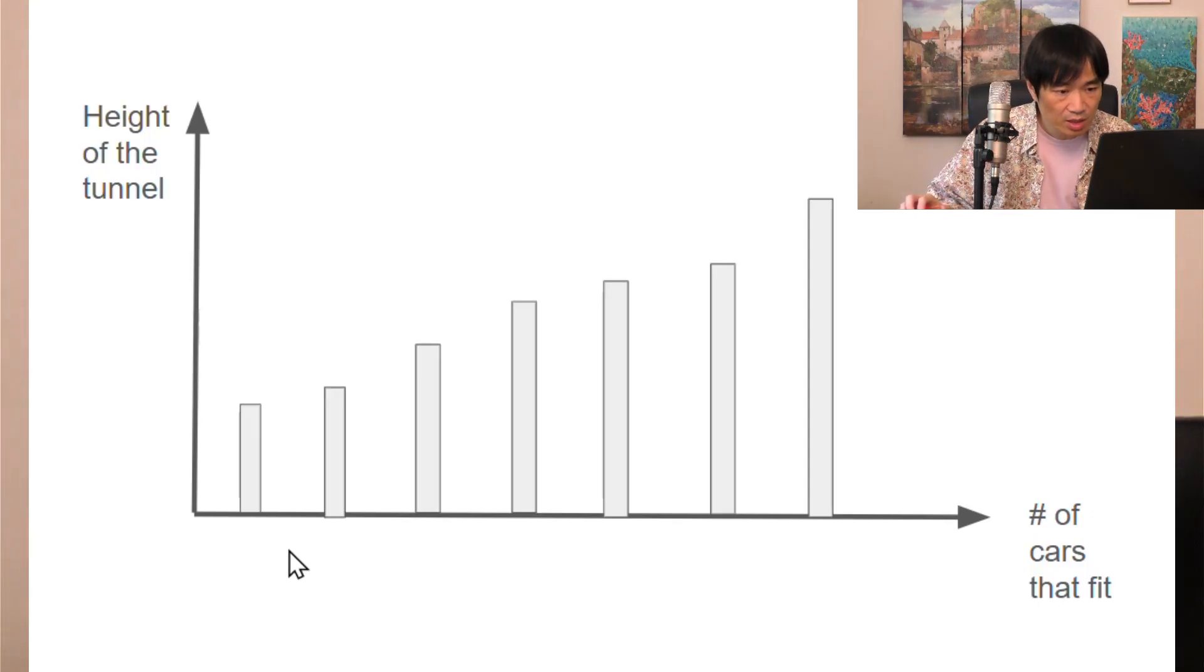So we line up all the cars based on how high their roofs are from the lowest to the highest. For simplicity, let's say this place only has seven cars. The lowest car is this high and the second lowest car this high and all the way to the highest. So if we connect the top of these bars, we get a curve.